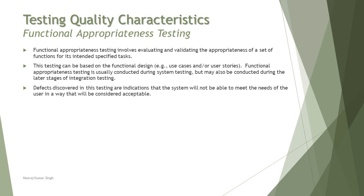The next topic is 4.2.2: Functional Appropriateness Testing. Appropriateness testing is something add-on to correctness testing — first you check whether it is correct, then you check if it is appropriate for that particular feature. For example, if a form has first name and last name as two different fields, we need to make sure the user enters the first name into the first name box and the last name into the last name box — so that entering everything in one field is caught. Functional appropriateness testing involves evaluating and validating the appropriateness of a set of functions for their intended specified task.